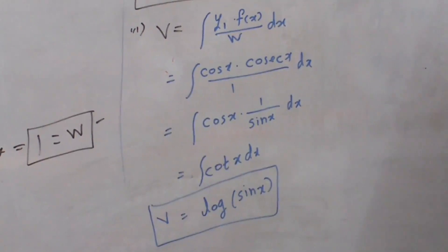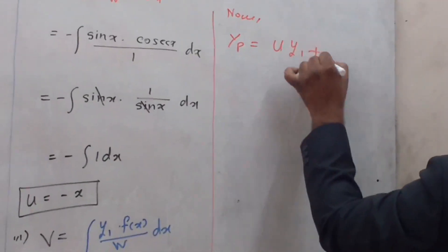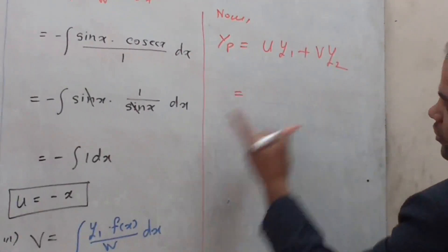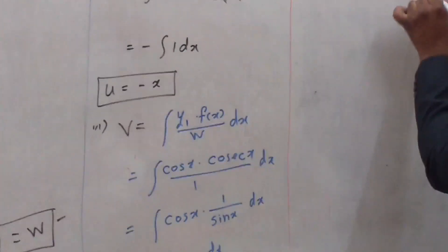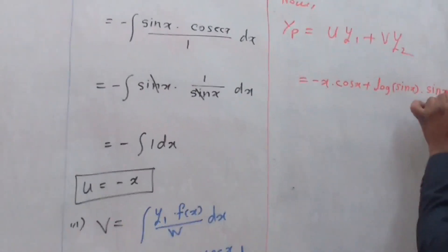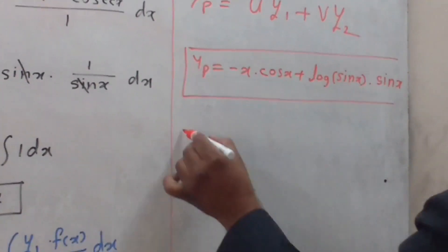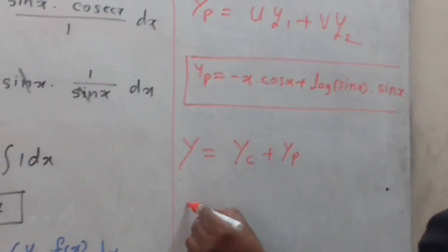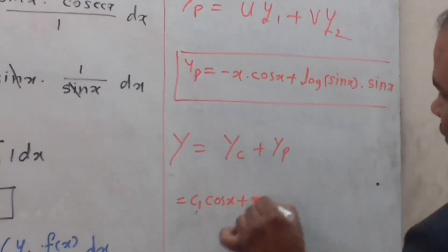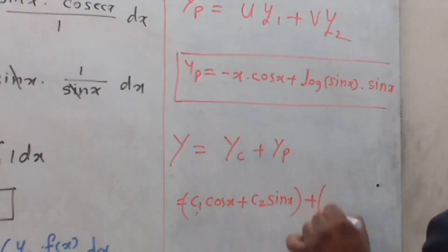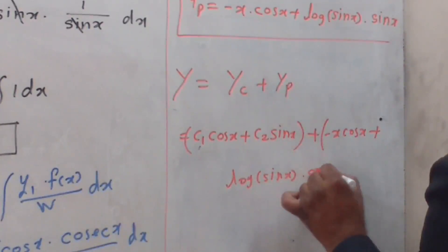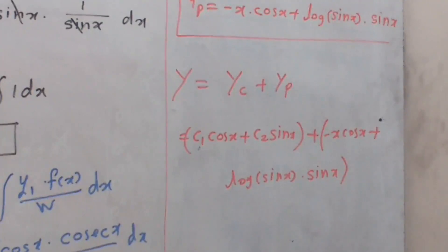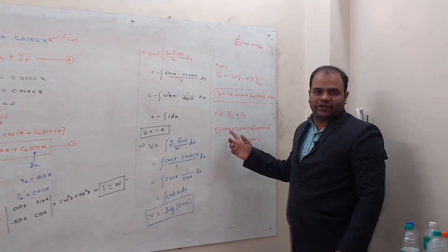Now we apply the standard equation for particular integral: yp = u·y1 + v·y2. Substituting the values: yp = (−x)·cos x + log(sin x)·sin x. Finally, the solution of the given differential equation is y = complementary function + particular integral, which is: y = c1·cos x + c2·sin x − x·cos x + log(sin x)·sin x. This is the required solution. By using variation of parameter we can find out the particular integral in this way.